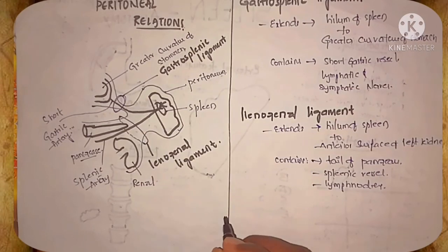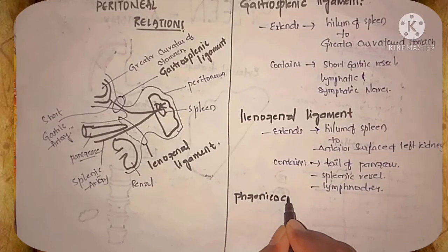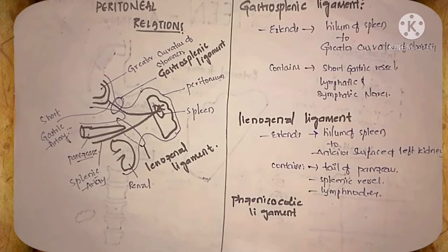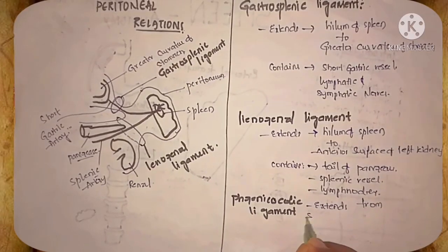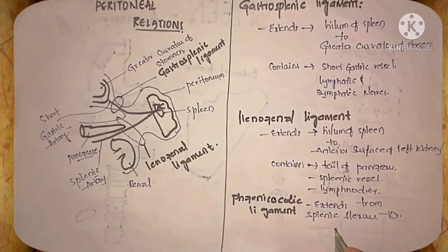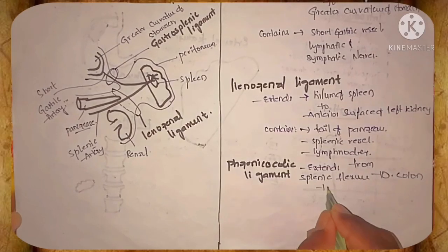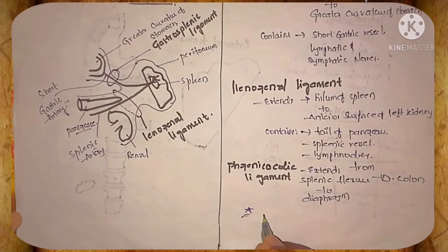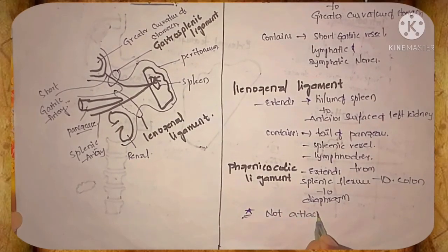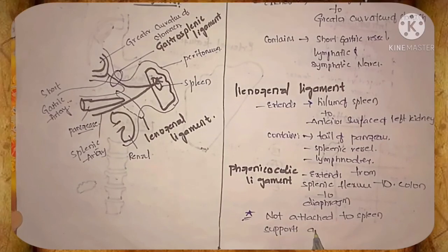And phrenicocolic ligament, the third ligament of peritoneum relation. Extends from the splenic flexure of colon to diaphragm. The probable question asked in the competitive exam are: which of the ligament is not attached to the hilum of the spleen? It is phrenicocolic ligament. It is the only ligament not attached to the spleen. It just supports the anterior end of the spleen.